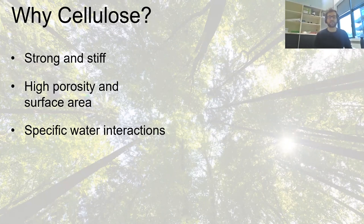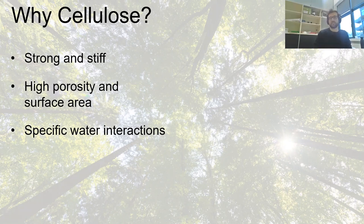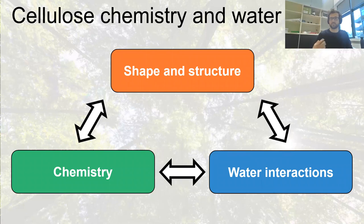Another very interesting property of cellulose is its strong and specific water interactions. For material science this can be an advantage — we can use this property to produce humidity sensors and shape-morphing materials that change shape upon different wetting conditions or humidity levels. But if you think about cellulose chemistry, it's rather a challenge, because most chemical reactions are most efficient without water. I will explain later how we can overcome this. In my talk I want to discuss first how we can control the shape of nanocelluloses, and then different chemical concepts to modify cellulose in a sustainable manner.